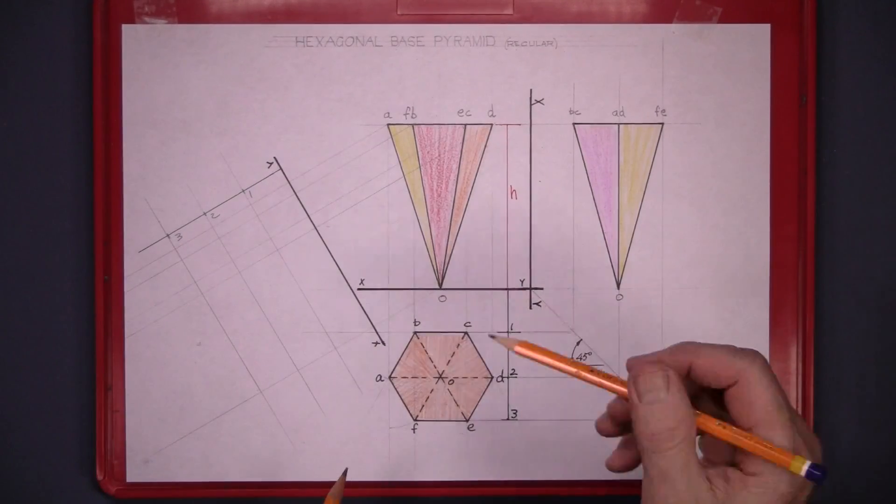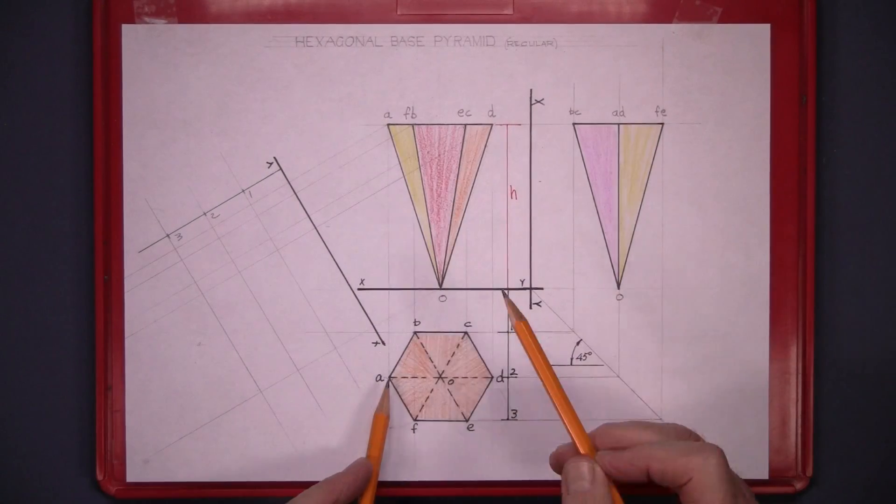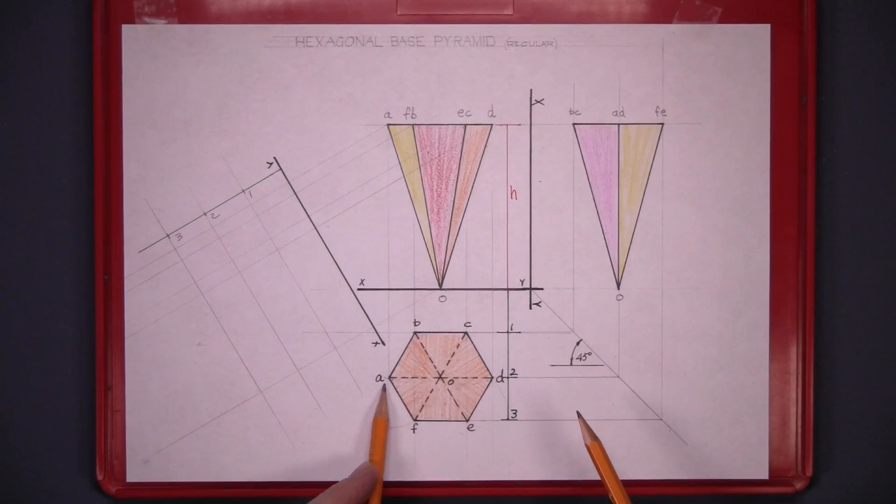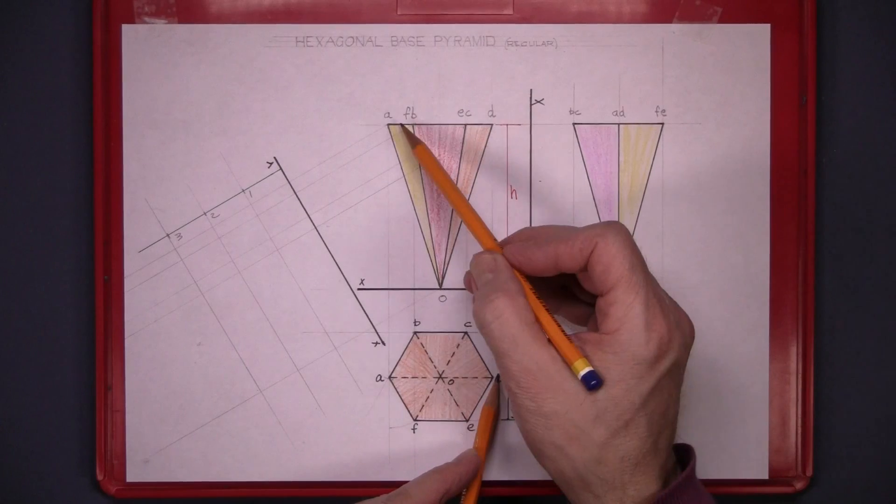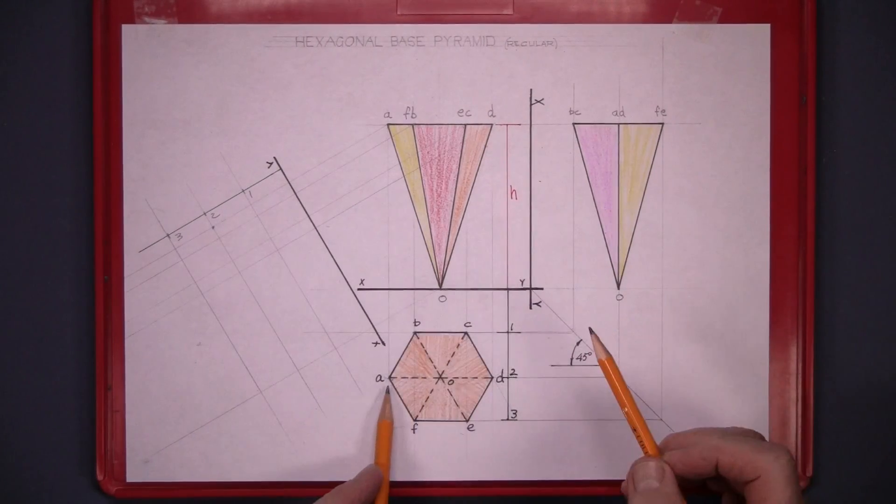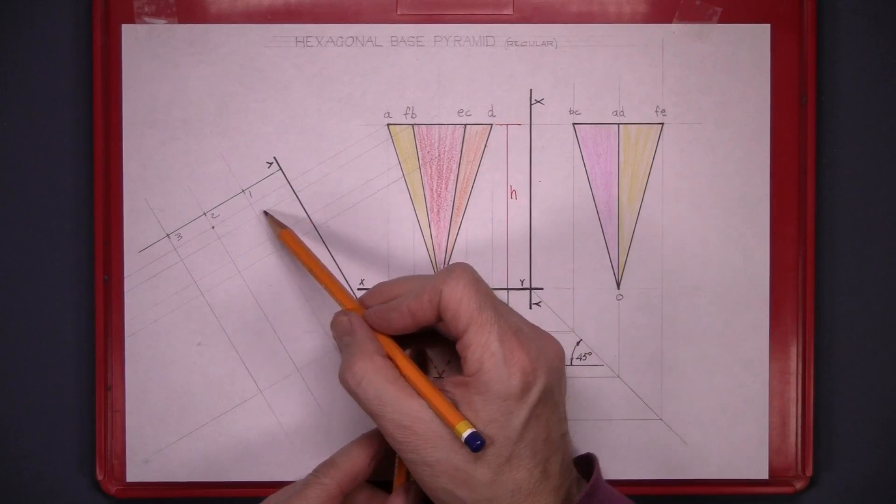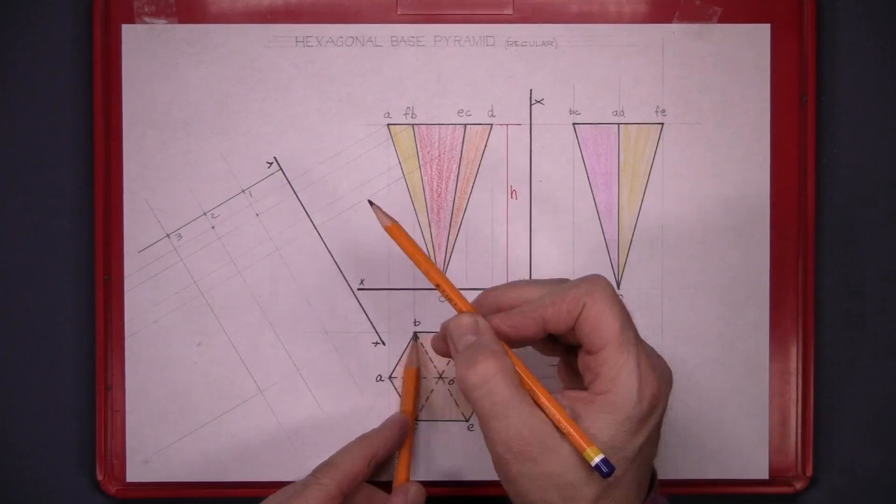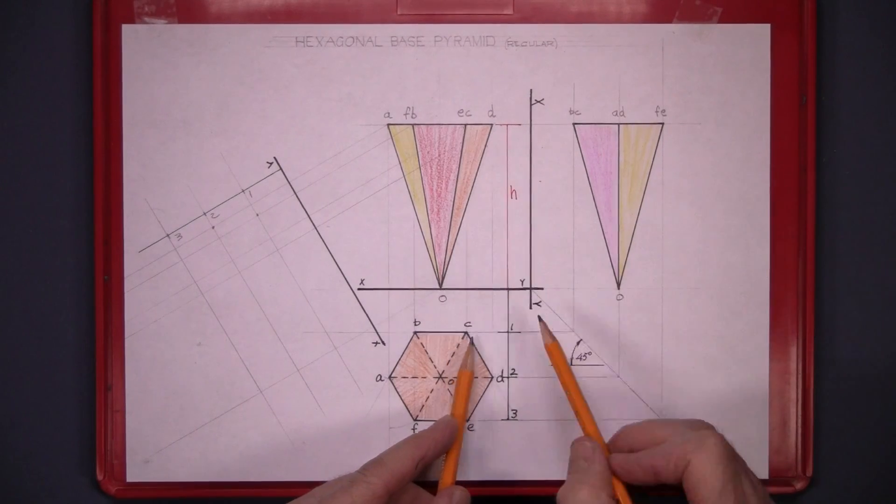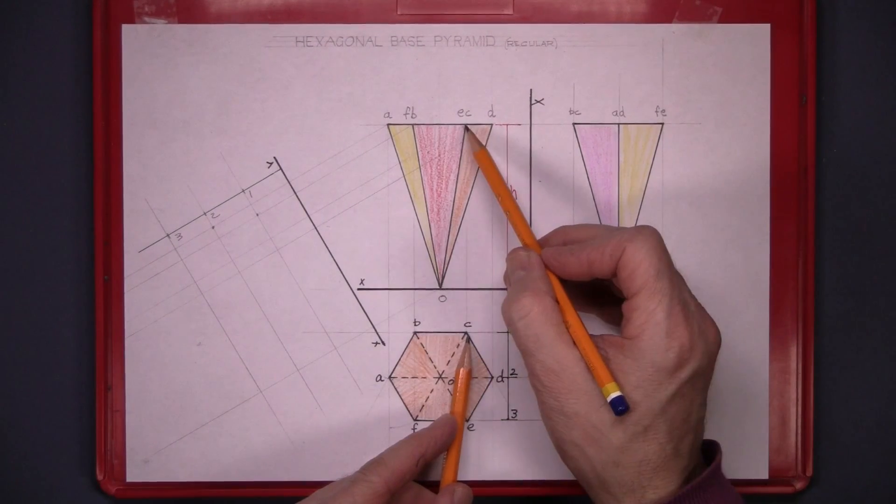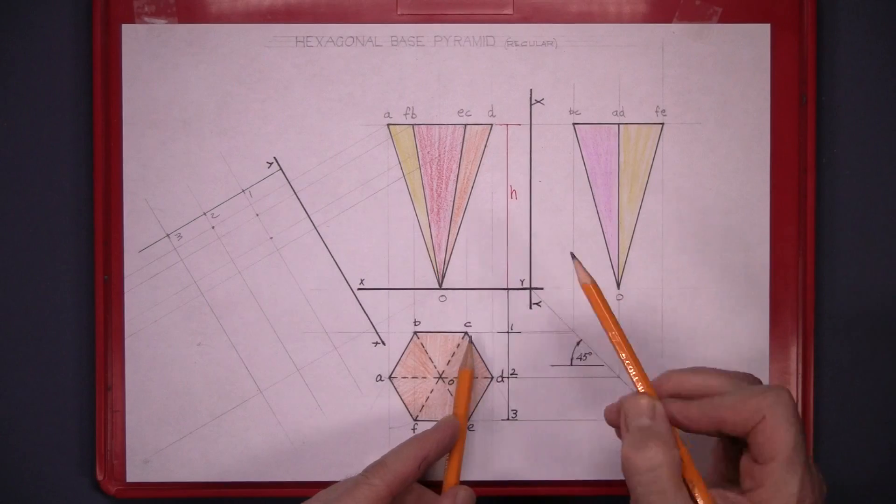So now point A is the outside point here. So it's on line number 2. So bring A down to number 2. Point B is on line 1, so bring B down to 1. Point C is on line 1. Bring C down to line 1. And D is on line 2. So bring D down from the elevation and mark it on line 2.